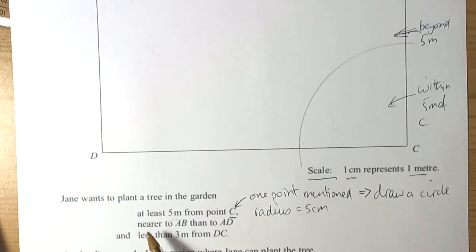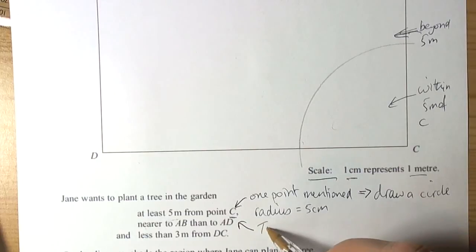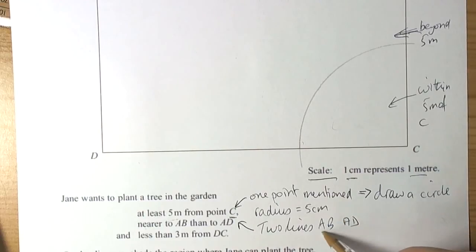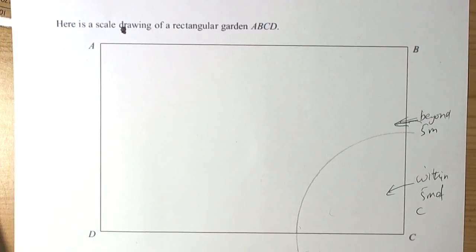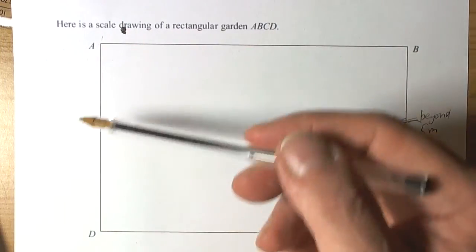The next part of the question says that we want to be nearer to AB than to AD. Now, this part, it's mentioned two lines. AB, AD. Those two lines, let's have a look where they are. AB, AD. Those two lines are meeting to create an angle.